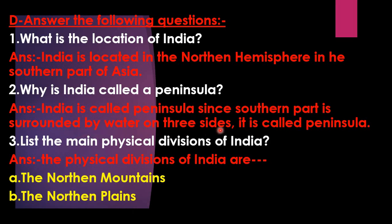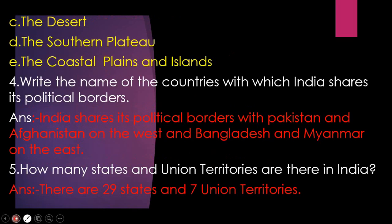Third question — List the main physical divisions of India. The physical divisions of India are: A) the northern mountains, B) the northern plains, C) the desert, D) the southern plateau, and E) the coastal plains and islands.